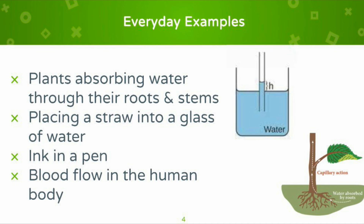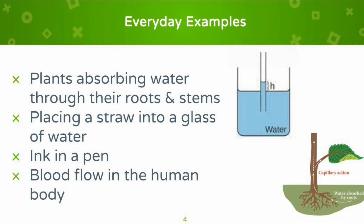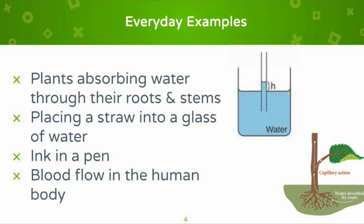Another example is placing a straw into a glass of water — the water inside the straw will rise a little bit higher, as you can see in the photo, and this is due to capillary action. Another example is the ink in a pen: capillary action is what allows the ink to flow from the reservoir where the ink is stored to the tip, which is why you're able to have smooth and consistent writing.